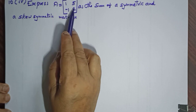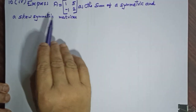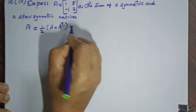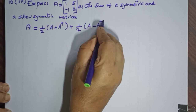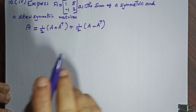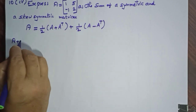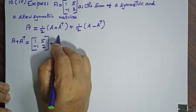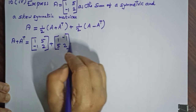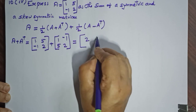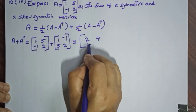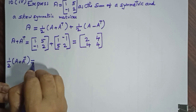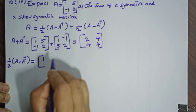In the next question, a matrix A equals (1, 5 / −1, 2) is given and we must express it as a sum of a symmetric and a skew-symmetric matrix. We know A equals half of A plus A-transpose plus half of A minus A-transpose. Finding A plus A-transpose: matrix (1, 5 / −1, 2) plus its transpose (1, −1 / 5, 2) equals (2, 4 / 4, 4).